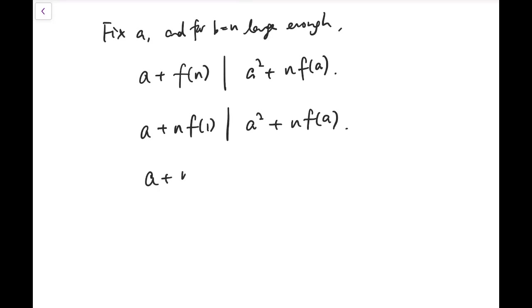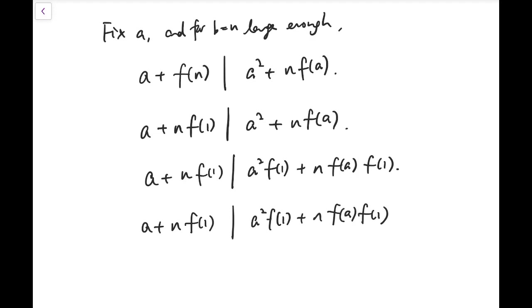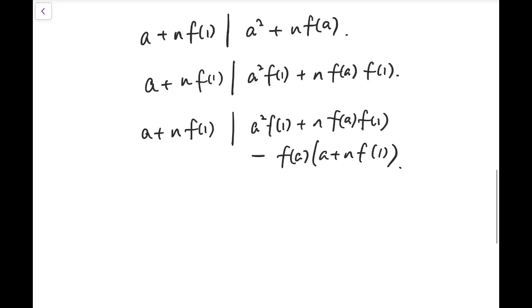And if I further multiply the dividend, this would divide a squared times f of 1 plus n f of a, f of 1. So this a plus n times f of 1 divides a squared times f of 1, actually the expression above, minus f of a times the divisor.